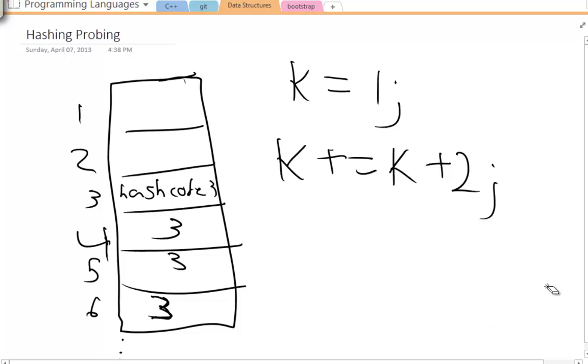And what this presents you to do is it allows you to, if the hash codes are different, to store them at different values because the calculation will be different based on the index.